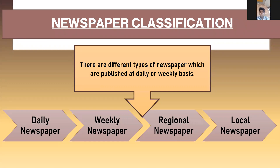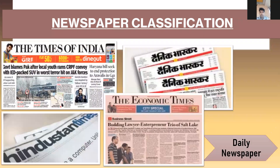The four mediums of newspaper are: daily newspapers, weekly newspapers, regional newspapers, and local newspapers. Daily newspapers are published and distributed daily. Examples include the Times of India, Hindustan Times, Dainik Bhaskar, and the Economic Times.